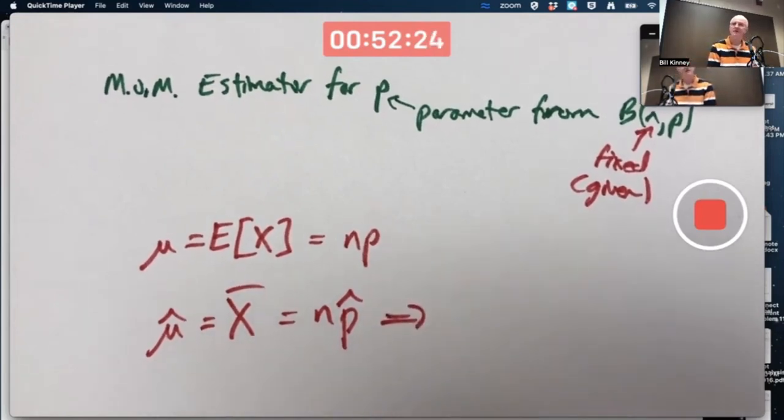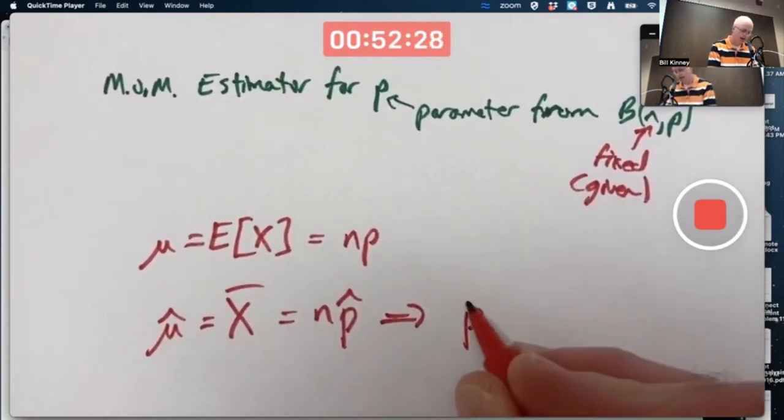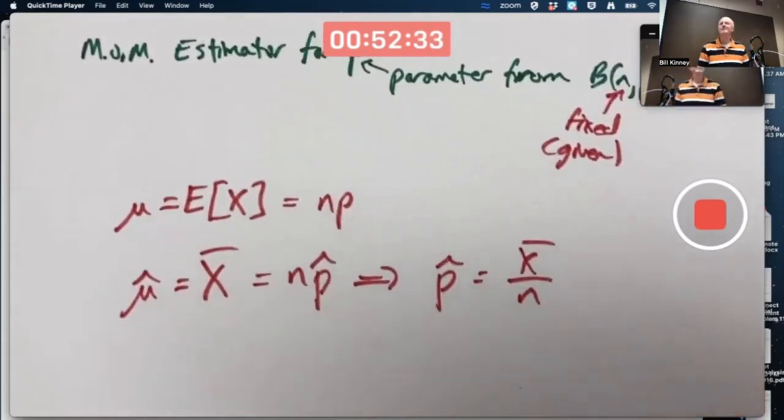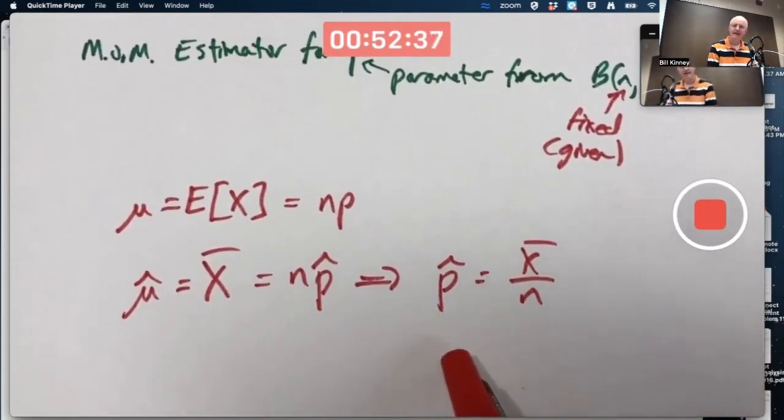Then, solve this equation for the estimator you want to find. Solve this for p̂. Divide both sides by N. The method of moments estimator for P is p̂ equals x̄ over N.